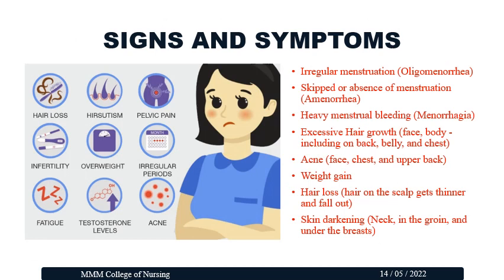The most common signs and symptoms of PCOD or PCOS include: irregular menstruation (oligomenorrhea), skipped or absence of menstruation (amenorrhea), heavy menstrual bleeding (menorrhagia), excessive hair growth on the face, body, back, belly and chest (hirsutism), acne on the face, chest and upper back, weight gain, hair loss — where scalp hair gets thinner and falls out — and skin darkening on the neck, groin and under the breast.